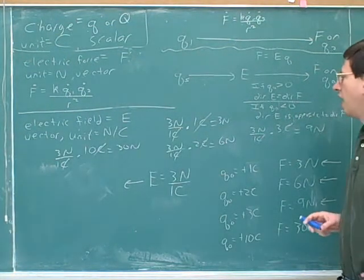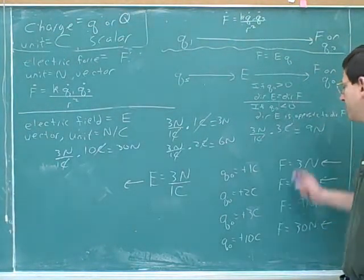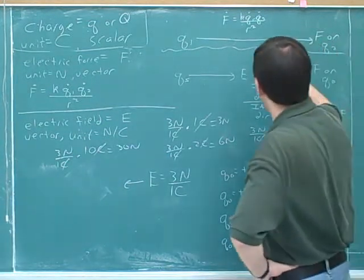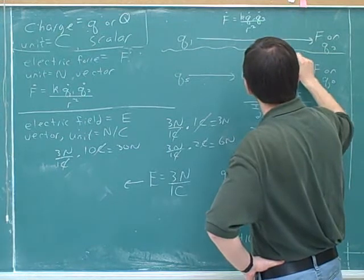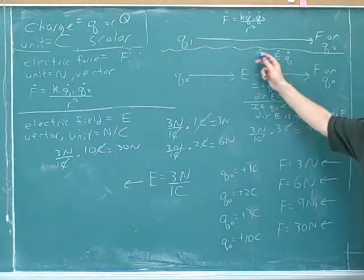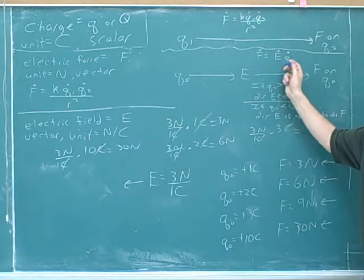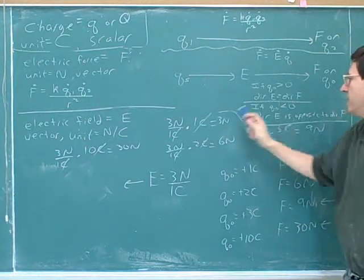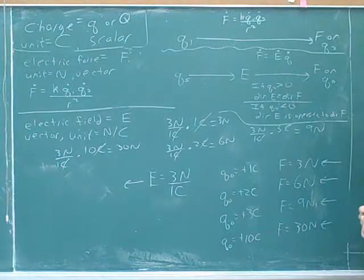One thing you might notice here is we've only been using this formula to find the magnitudes. We use this rule for the directions. So again, I'm going to put in dots to show that we're only going to put in positive numbers here. We're only going to use this formula to find magnitudes because there's a much easier way to find the directions. We can just use these rules to find the directions.